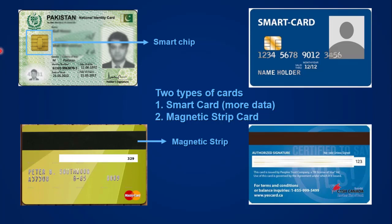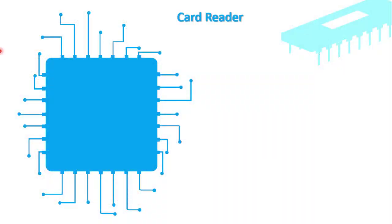The latest cards have both a smart chip and a magnetic strip at the same time, so we still call them smart cards. The difference between a smart card and a magnetic strip card is that a smart card can store more data compared to a magnetic strip card. To read these cards, we have a device called the card reader, which is an input device.